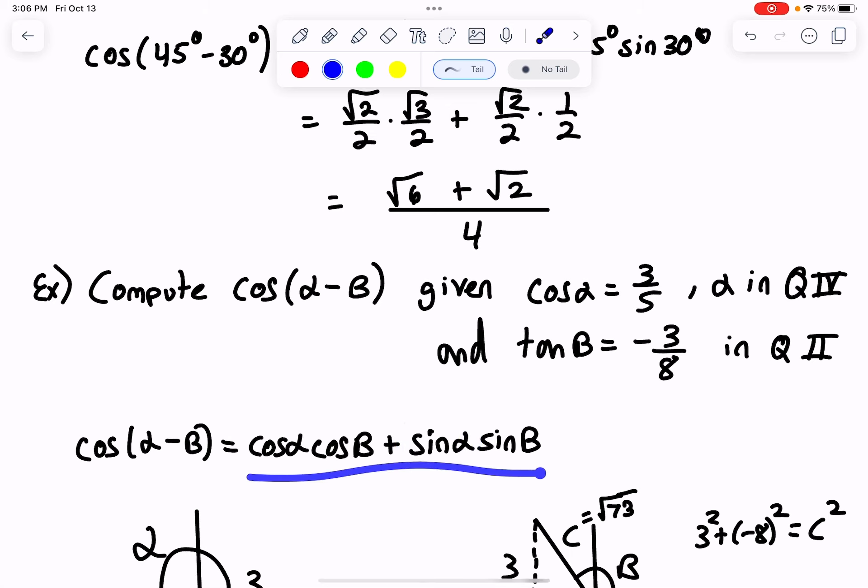Of those four values, the only one I know right away is cosine of alpha equals three-fifths. This problem combines something we've done before with this identity. We've done problems where if I know cosine alpha, I can figure out sine alpha by drawing a picture. If I know tangent beta, I can figure out cosine beta or sine beta.